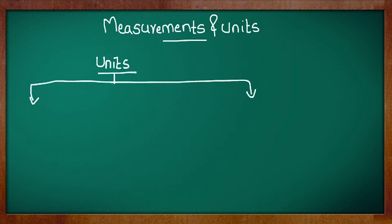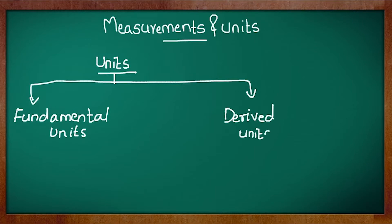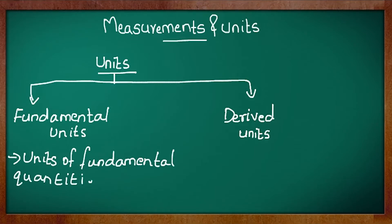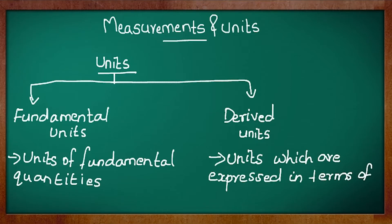Units are of two types: fundamental units and derived units. Fundamental units are units of fundamental quantities, and derived units are units which are expressed in terms of fundamental units.